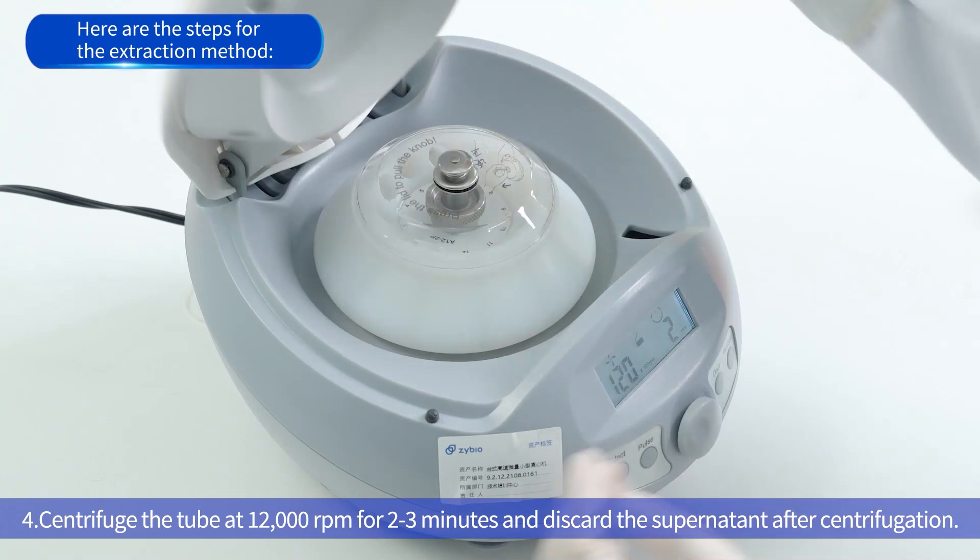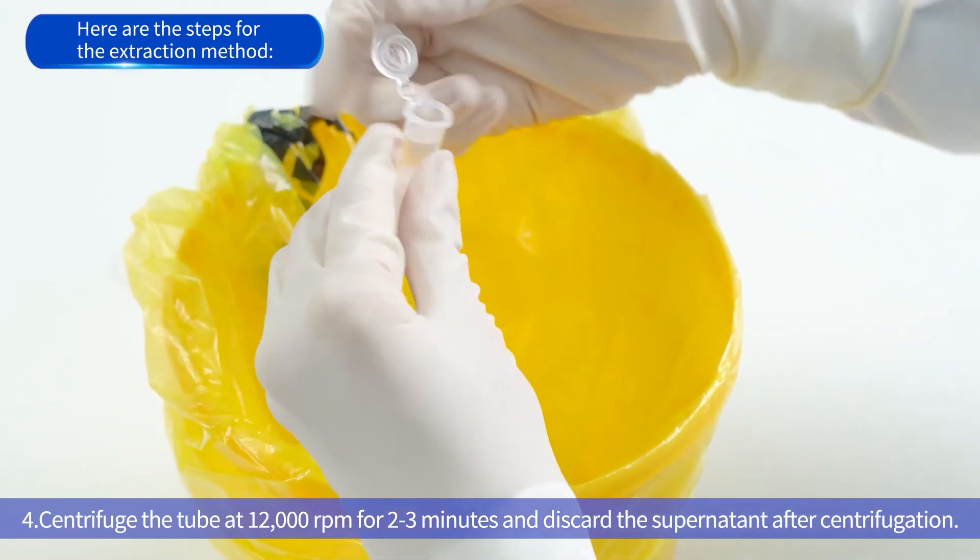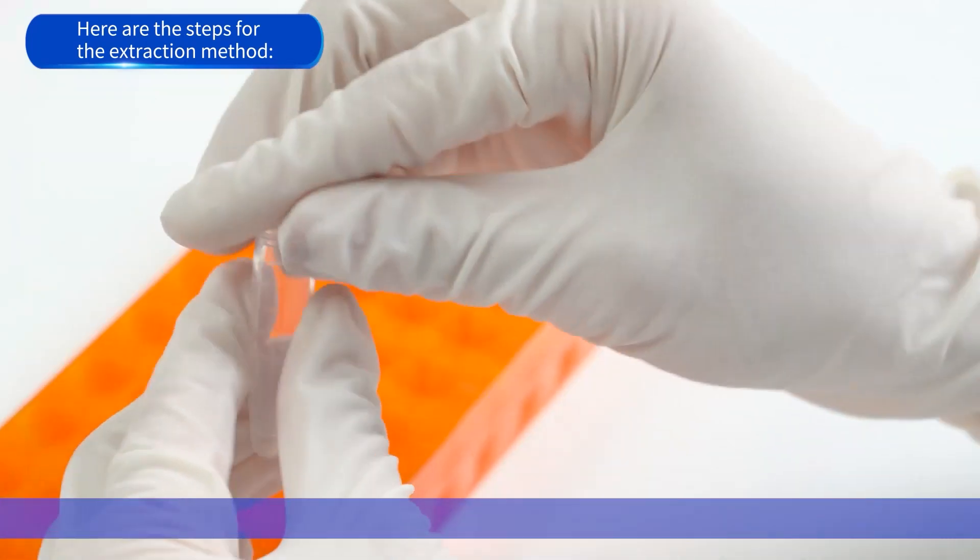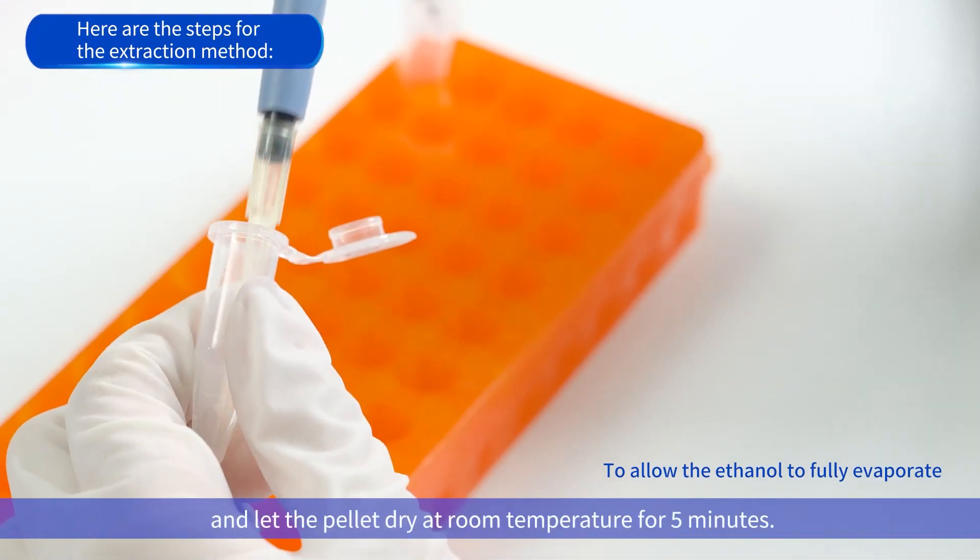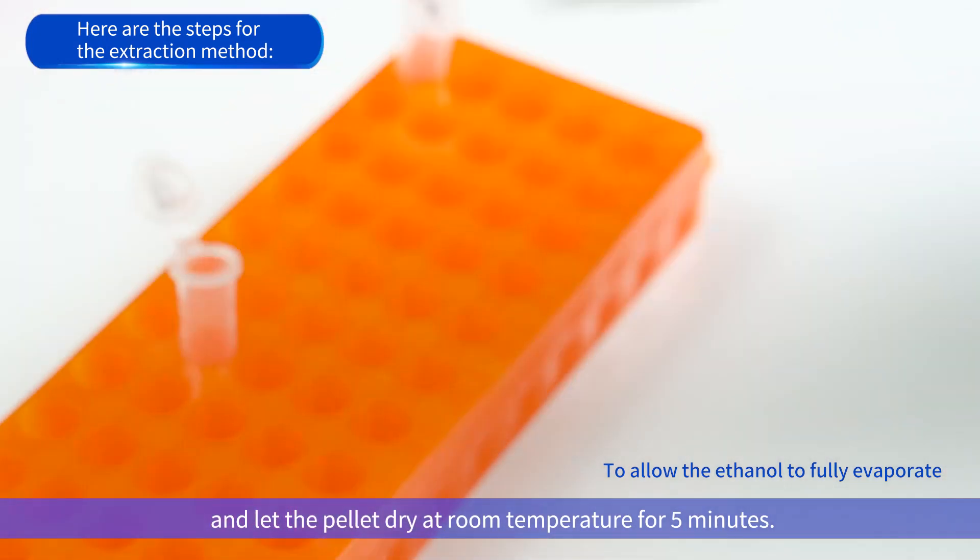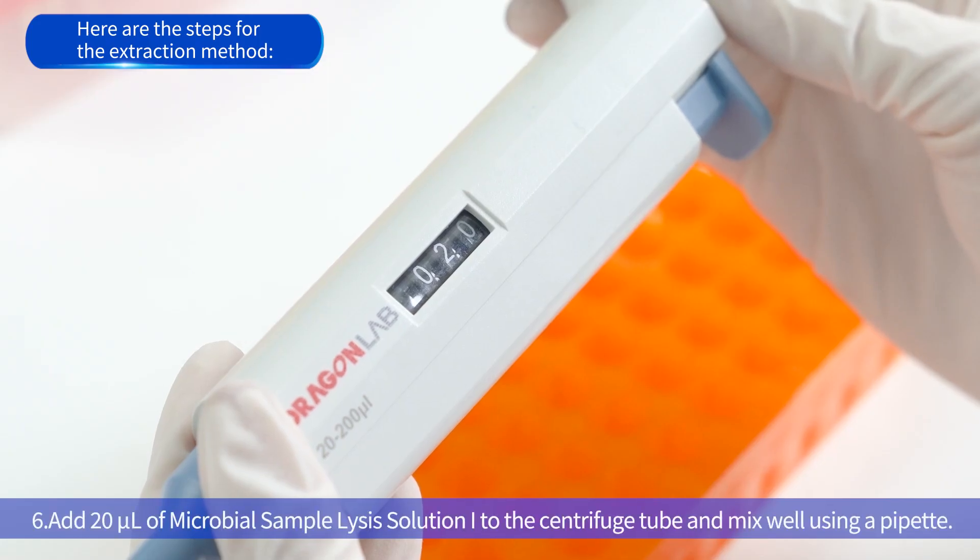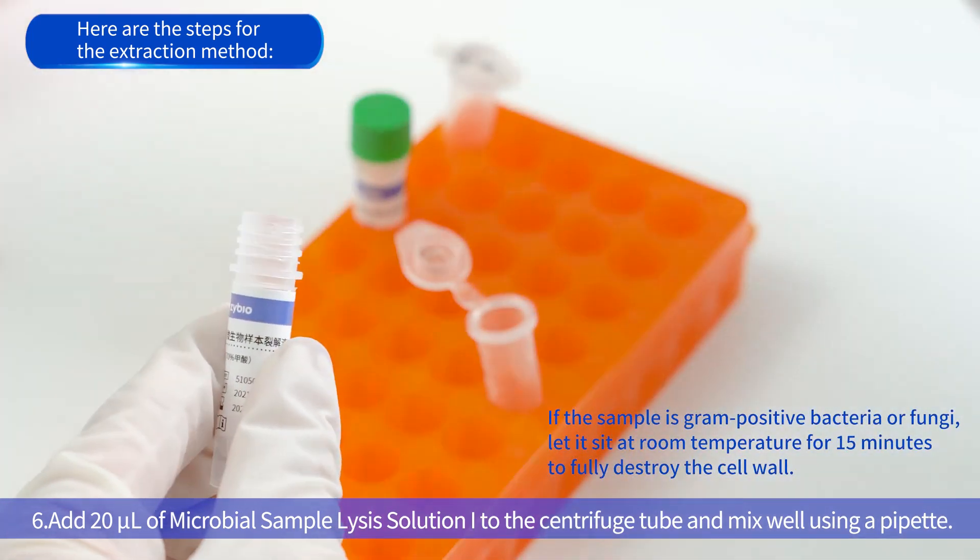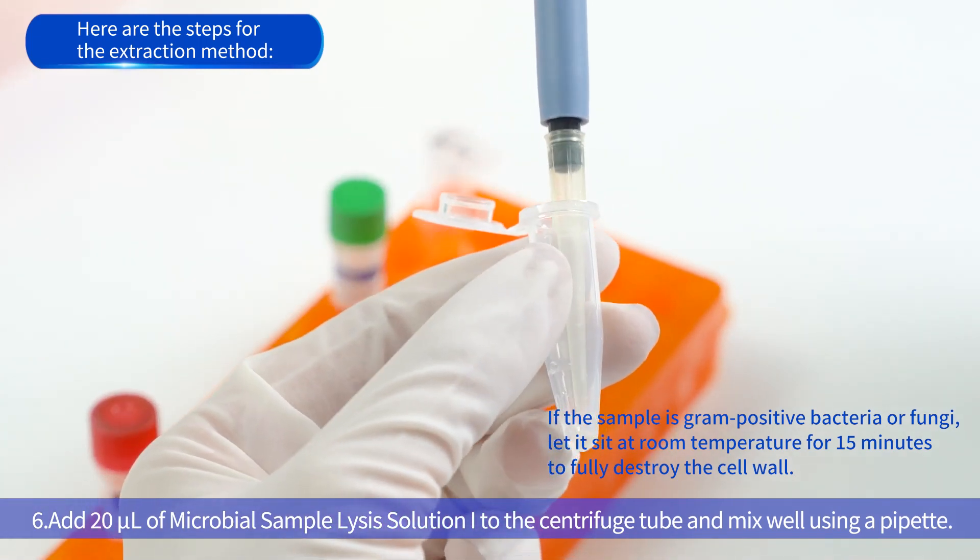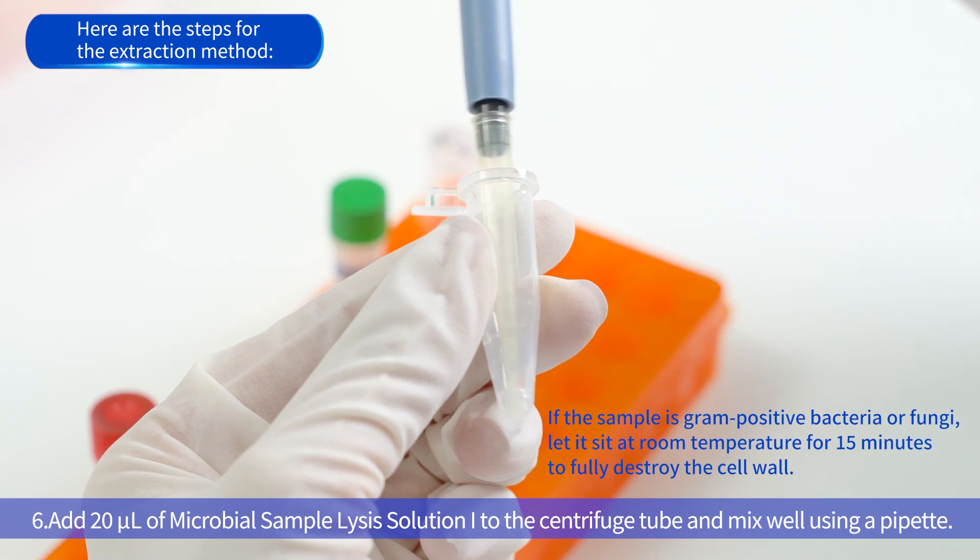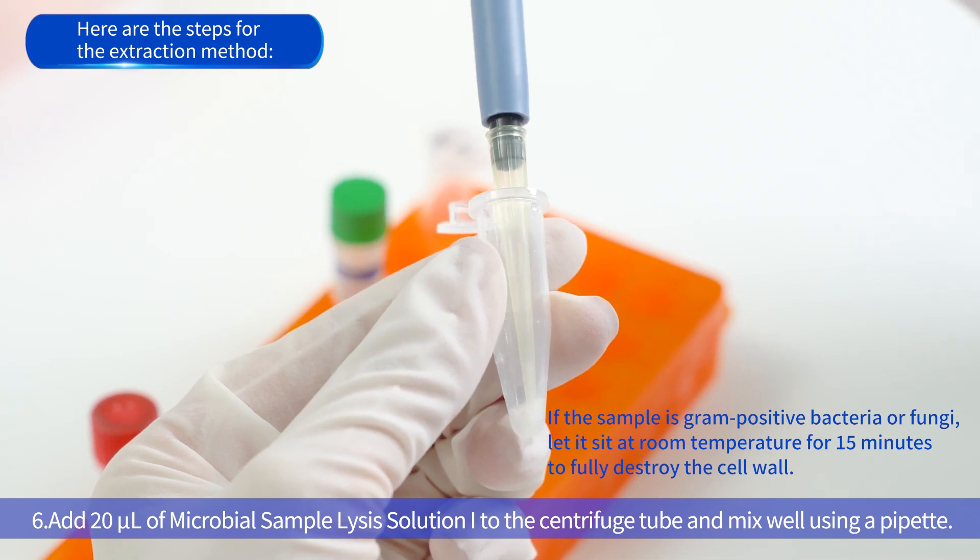Fourth, centrifuge the tube at 12,000 rpm for 2 to 3 minutes and discard the supernatant after centrifugation. Fifth, use a pipette to fully aspirate the residual supernatant and let the pellet dry at room temperature for 5 minutes to allow the ethanol to fully evaporate. Sixth, add 20 microliters of microbial sample lysis solution 1 to the centrifuge tube and mix well using a pipette. If the sample is gram-positive bacteria or fungi, let it sit at room temperature for 15 minutes to fully destroy the cell wall.